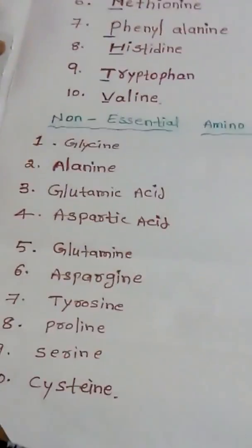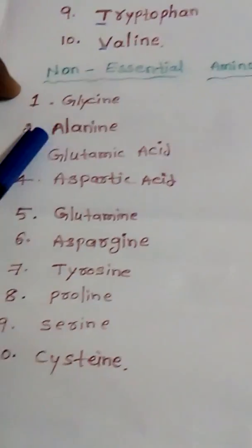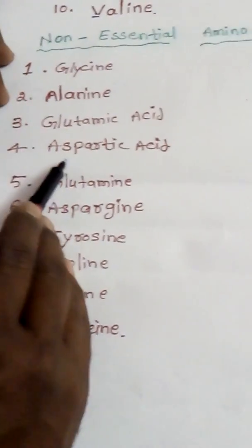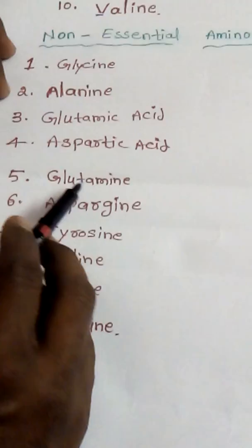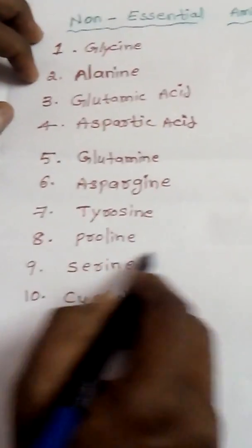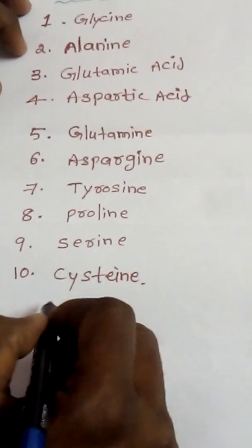Now we go for the non-essential amino acids. Non-essential amino acids are glycine, alanine, glutamic acid, aspartic acid, glutamine, asparagine, tyrosine, proline, serine, and cysteine.